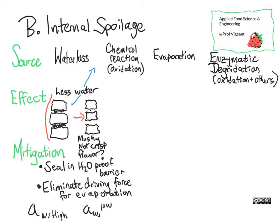Mitigation is pretty much what you'd expect. If you somehow coat your fruit in something that water can't get through — say you take your apple and completely cover it all over with wax, which is a hydrophobic compound, a nonpolar compound that water doesn't really like to dissolve in — you can seal it and keep the water from getting out. Something else you can do is eliminate the driving force for evaporation. What does that mean?